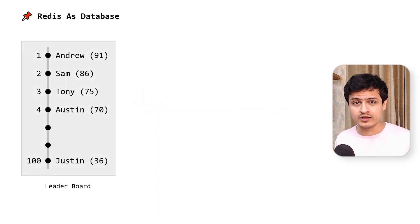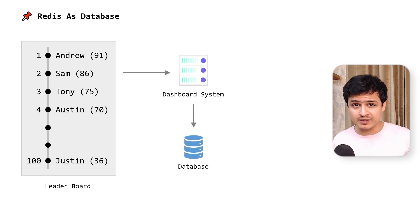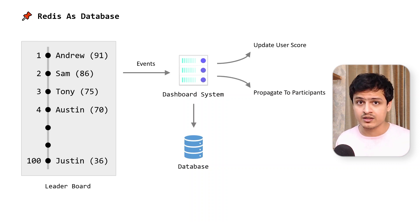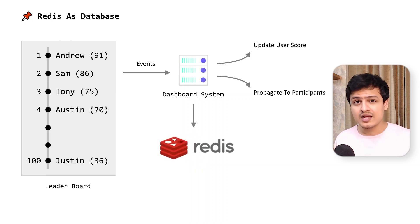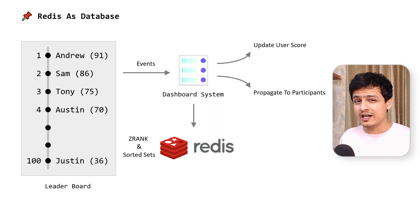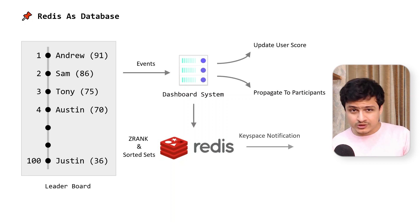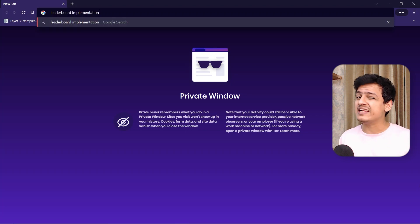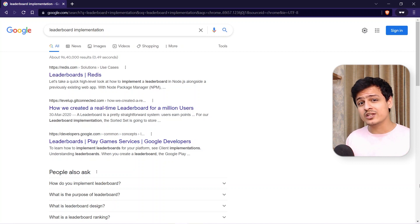Let's take an example of building a leaderboard. We would have hundreds or even thousands of users who need to be ranked based on their score. Sure, you can achieve this in any general-purpose database, but try to imagine the load a leaderboard system can generate. Each action a user performs can influence their score, and like any real-time system, the updated rankings have to be propagated to all subscribed participants in real-time. Instead of using a beefier database for this, we can use Redis. Sorted sets and the Z-Rank operation are perfect for this, and since everything is in memory, it's blazing fast. You can use keyspace notifications to relay the mutations back to your primary data store.